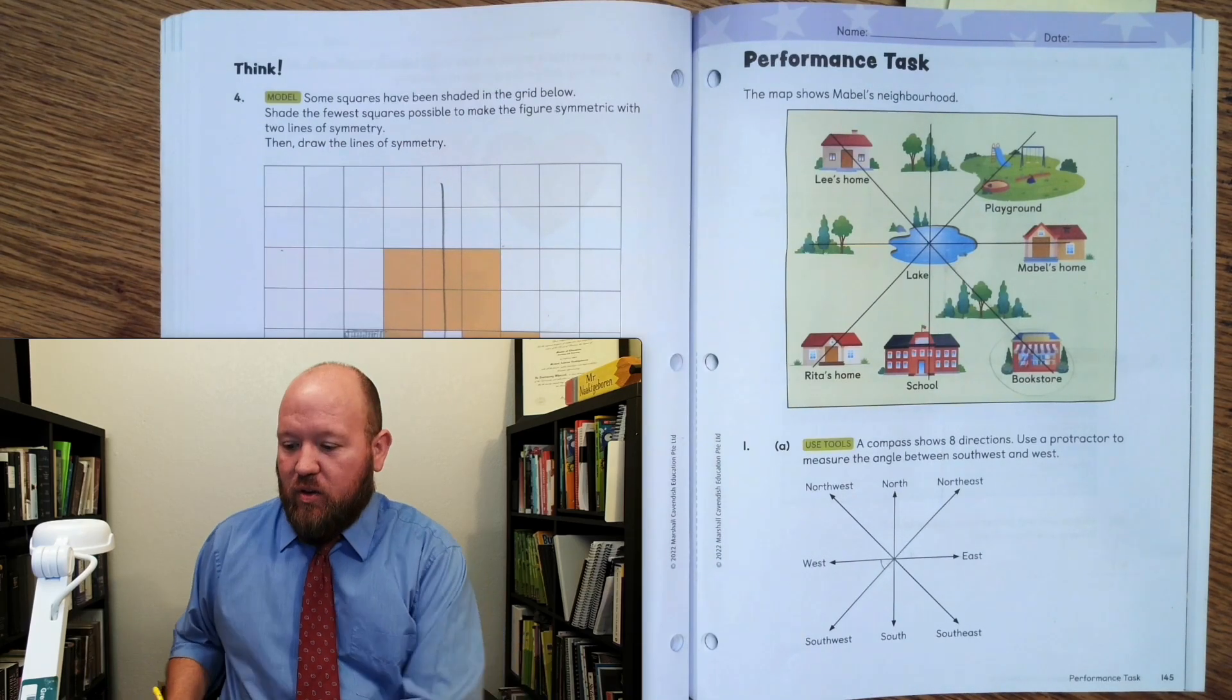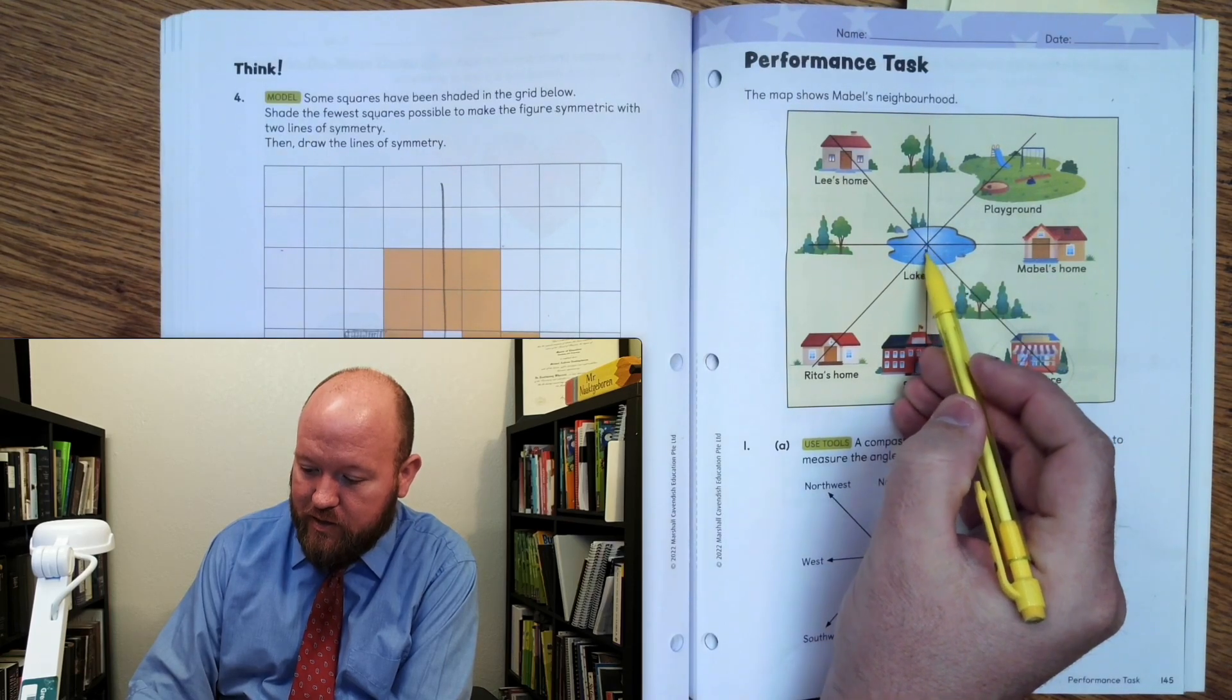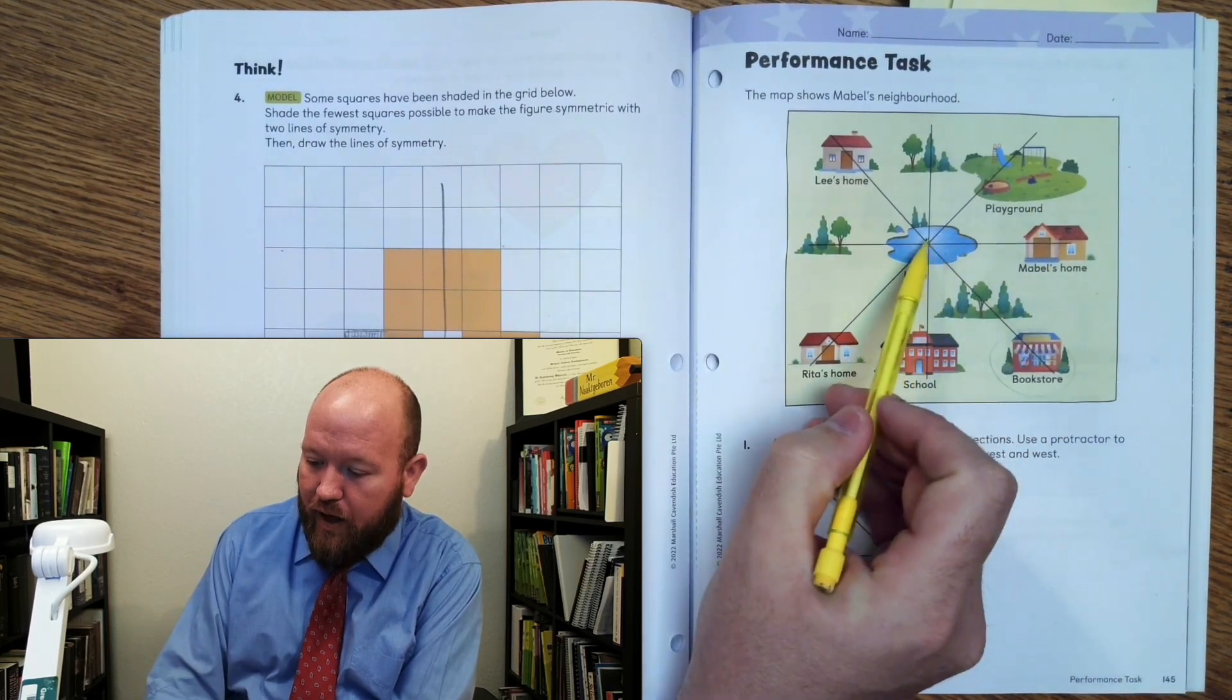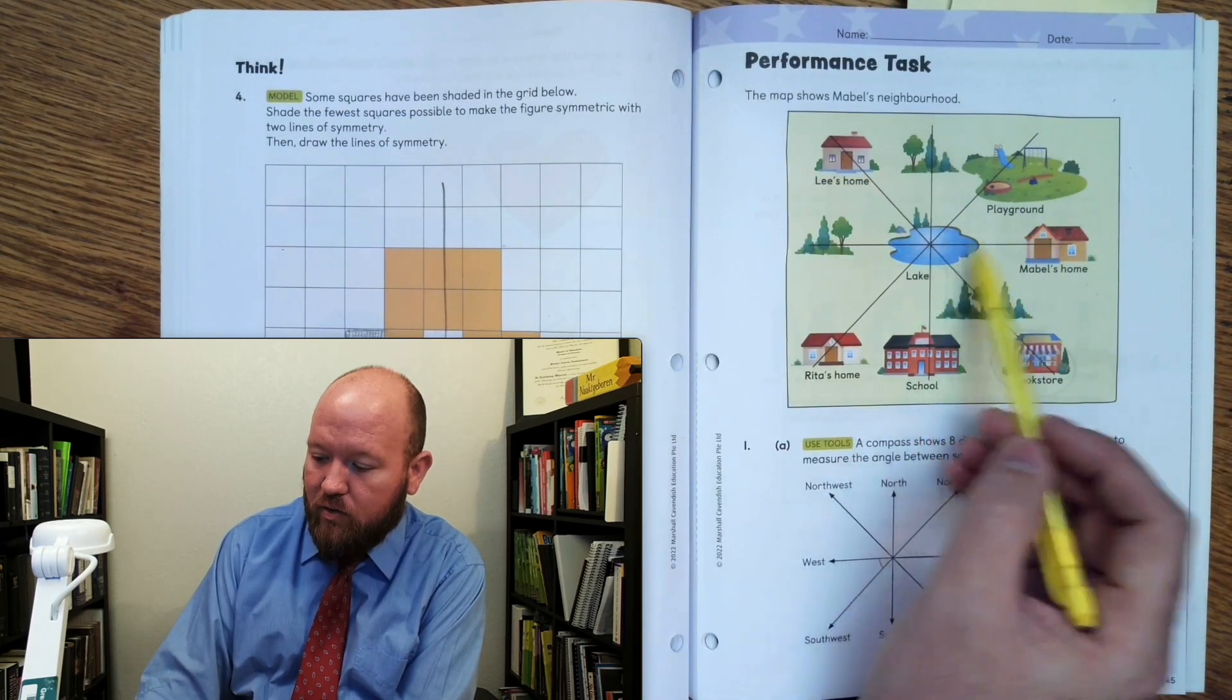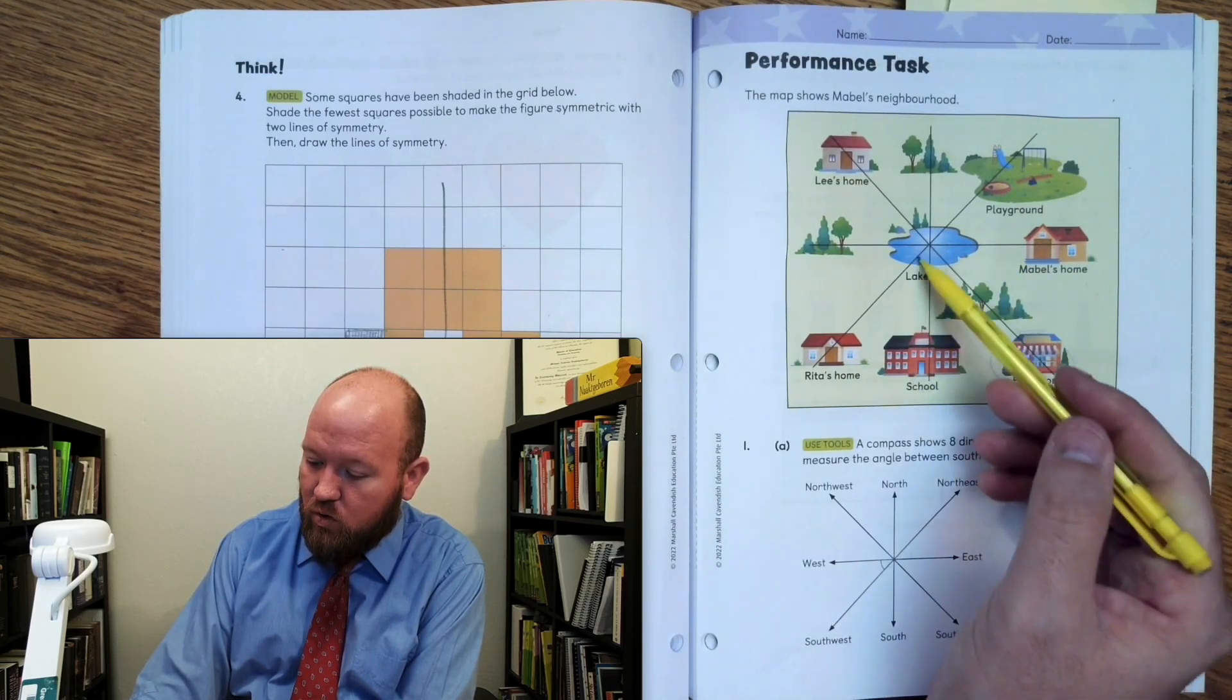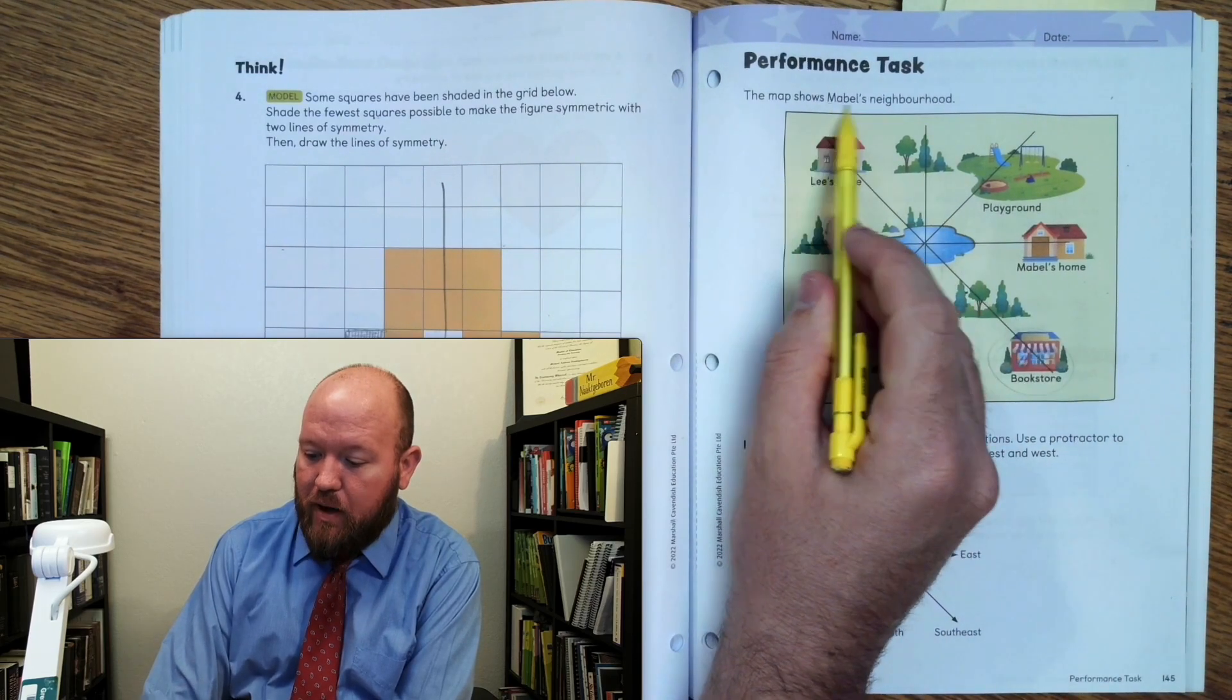All right, so here we have a map. You can see that the lake functions as the very center of the map, and we have lines going off in Lee's direction, the playground, Mabel's home, the bookstore, school, and Rita's house. And this is Mabel's neighborhood.